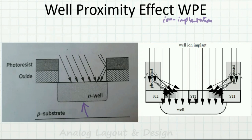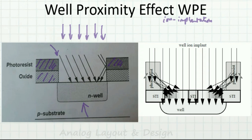When we do ion implantation, a very high energy ion beam is focused in the exposed area. Here you have the photoresist and the oxide, and in between is the exposed area. We focus a very high energy ion implant beam in this region, and when this beam hits the photoresist, the ions get diverted as shown in the diagram.